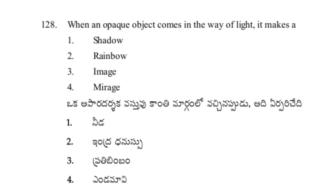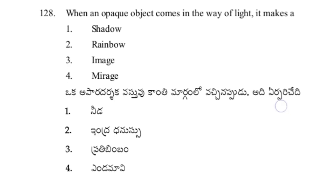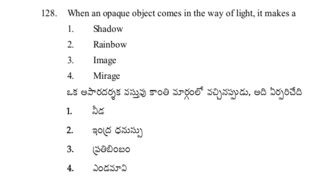When an opaque object comes in the way of light, it makes a shadow — option 1, answer.